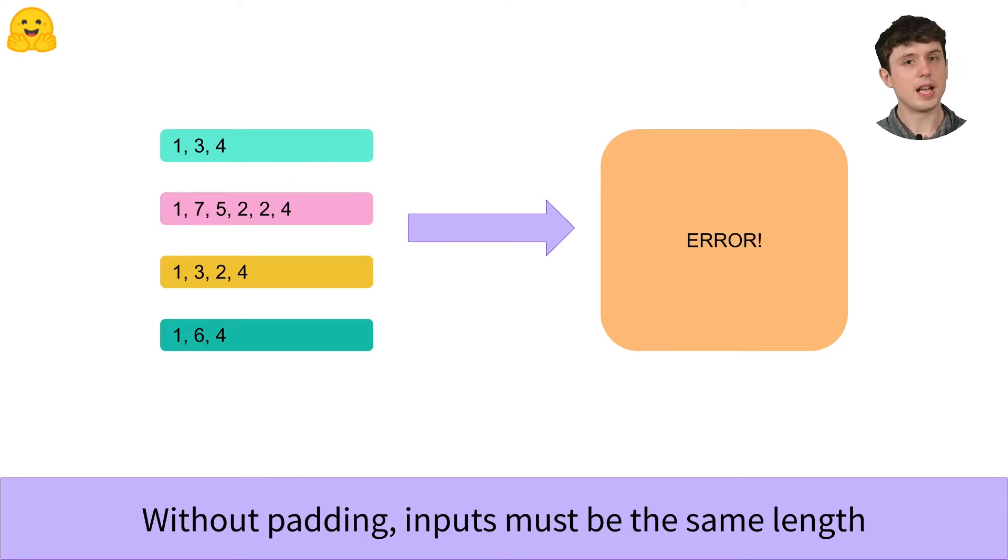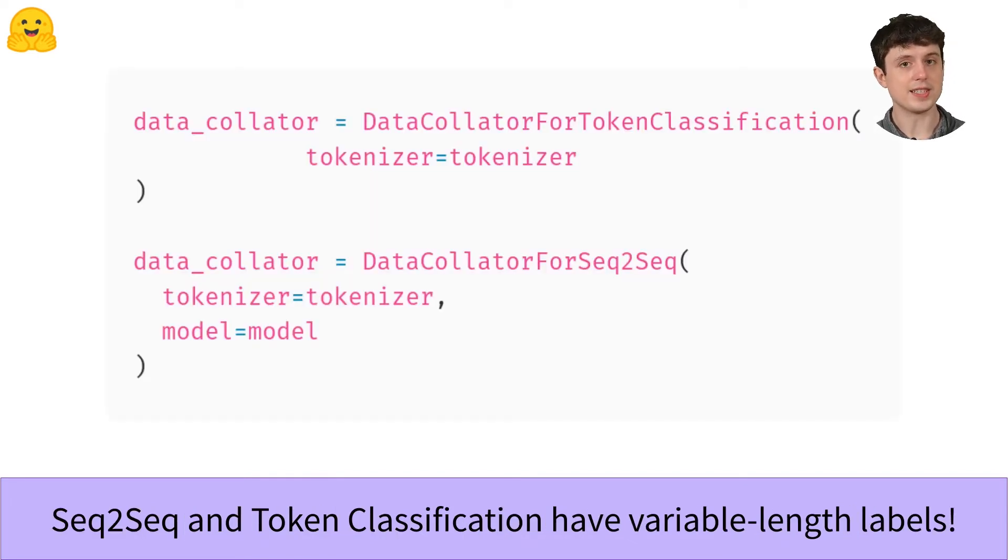Moving on though, a lot of the other data collators aside from the basic two are usually designed to handle one specific task. And so I'm going to show you a couple here. These are DataCollatorForTokenClassification and DataCollatorForSeq2Seq.